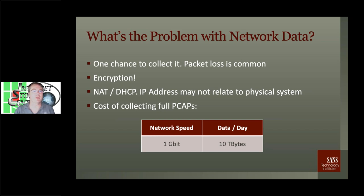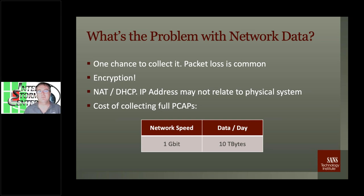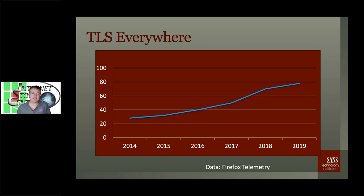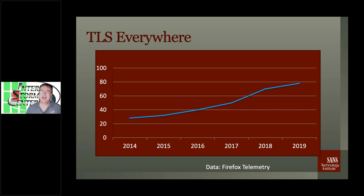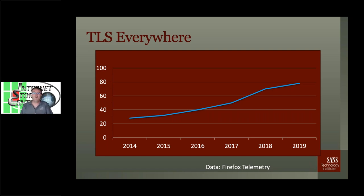Other issues in real networks: NAT and DHCP mean you may have dynamic address assignments, so if you're going back too far that IP address may no longer tell you what system caused the traffic. To illustrate the TLS problem — which is what this talk is about — here is the percentage of TLS traffic based on Firefox's telemetry data, and we're in the 80% range. So 80% of traffic across the internet is using TLS. We're talking about HTTP traffic, but the internet is the web for most people.